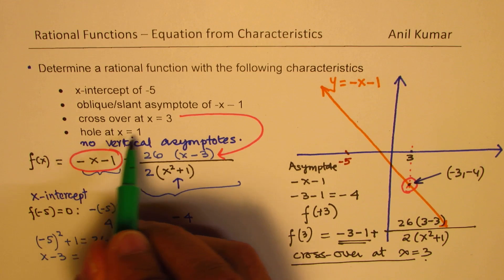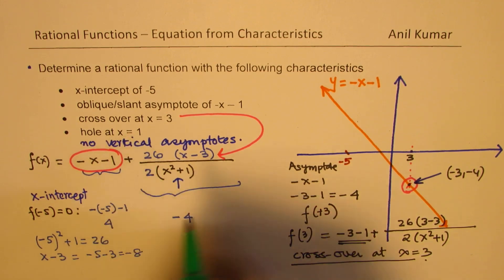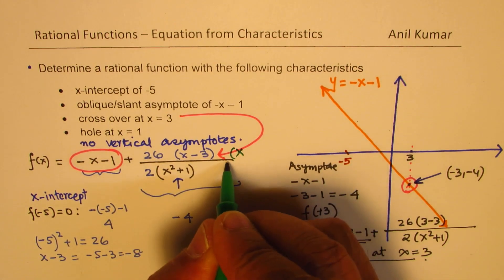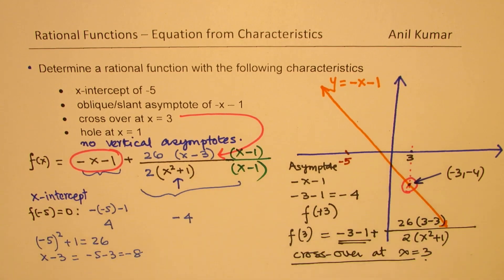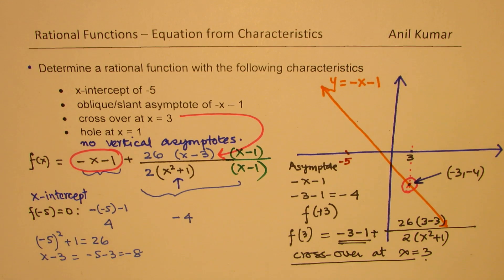Perfect. And now it is easy to get hold of the next point, which is providing a hole. So to provide a hole at x equals 1, we could just multiply and divide by x minus 1. Do you get the idea?